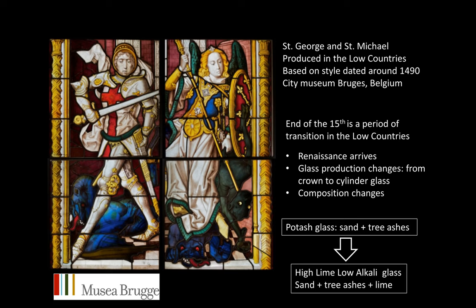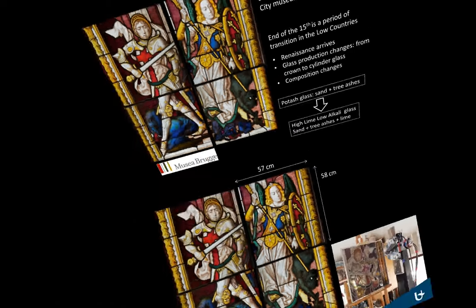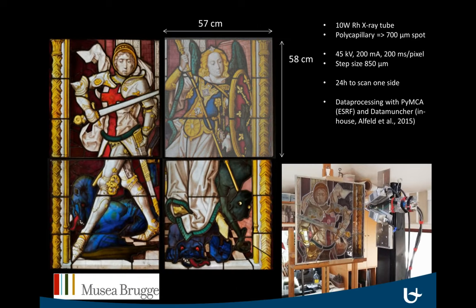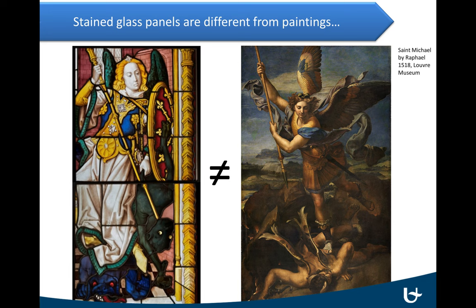Potash glass is basically sand with tree ashes, while high-lime, low-alkali glass is sand and tree ashes with an excess of lime. Here you see the parameters we used to measure this panel of about 57 by 58 centimeters, resulting in a total scanning time of approximately 24 hours. However, stained glass windows are similar to easel paintings but not entirely the same. Before we started scanning, I asked myself in what way they are different and what the consequences would be for the experiments.